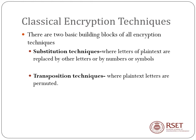Now moving to the main topic of this session: classical encryption techniques — techniques used in earlier times to perform encryption. Some have a mathematical background, others do not and simply involve shifting, substituting, or transposing letters. There are two basic building blocks of all encryption algorithms: substitution techniques, where letters of plaintext are replaced by other letters or numbers; and transposition techniques, where you change the position of letters by permuting their order.